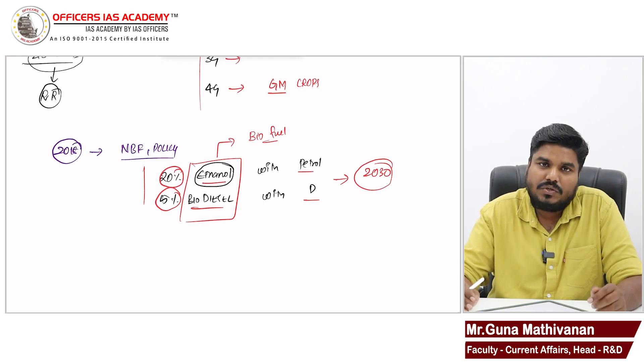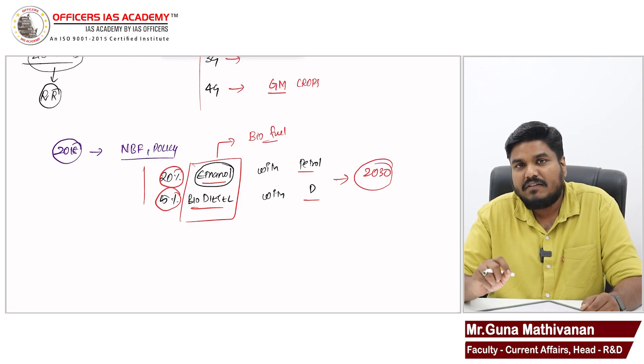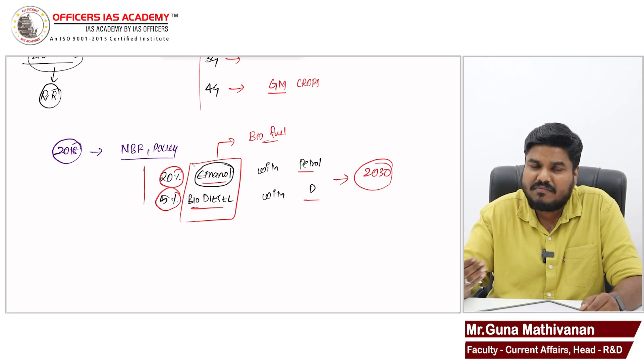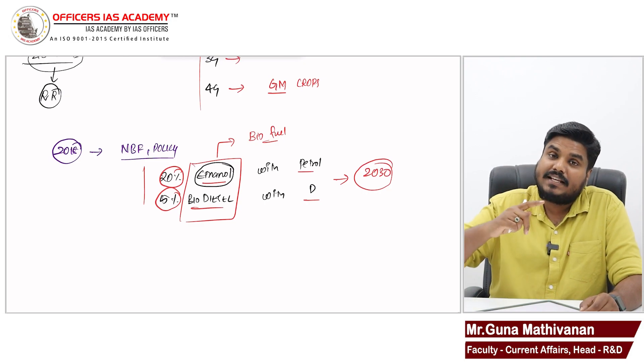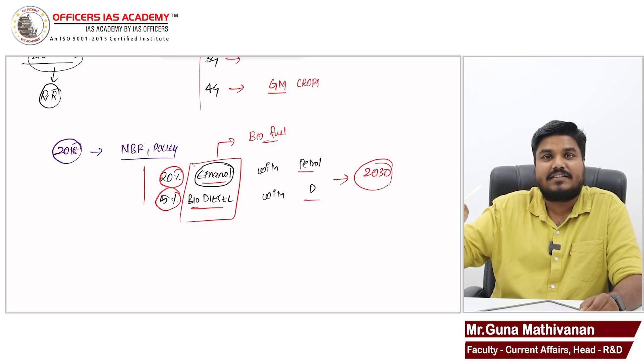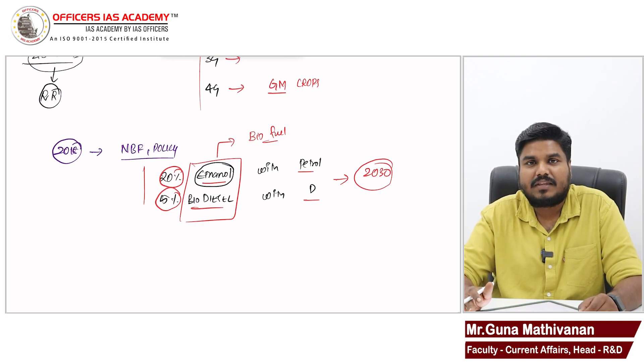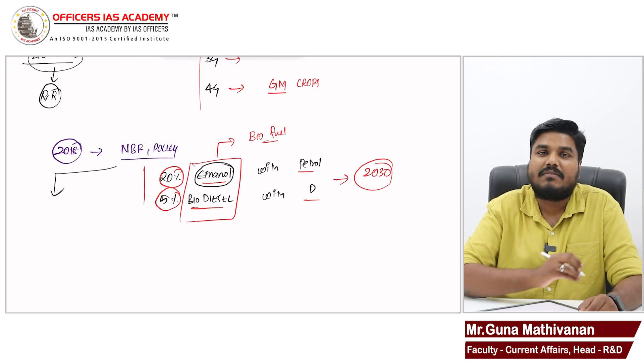Today, we can use damaged food grains also to produce biofuel and whenever there is surplus production of rice, wheat, after getting permission from the government, after getting permission from a national biofuel coordination committee, we can use the excess fresh food grains like rice and wheat also to produce this biofuel.